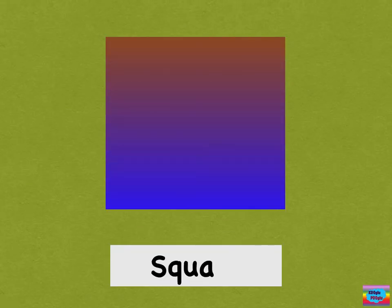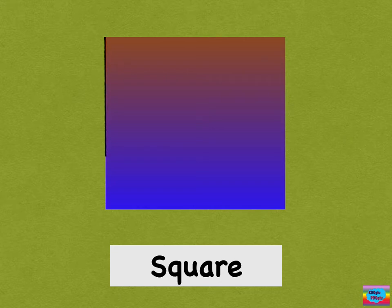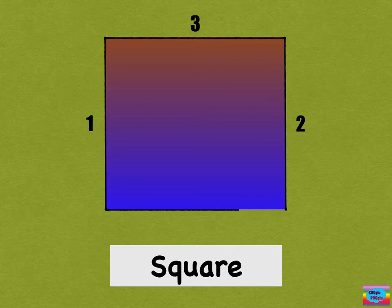This is a square. Here's one side, two side, three side, and four side. And one corner, two corner, three corner, and four corner.